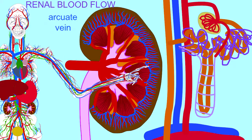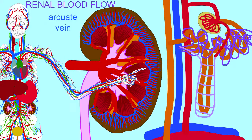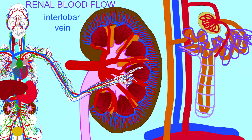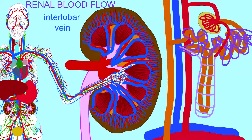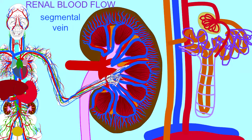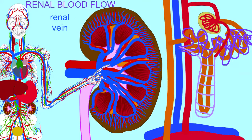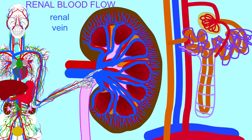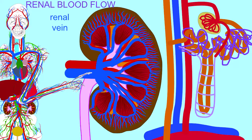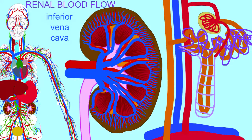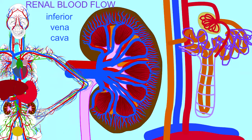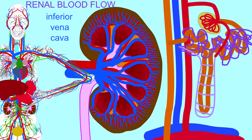These capillaries then drain into cortical radiate veins, which drain into arcuate veins, which drain into interlobar veins, which drain into segmental veins, which drain into the renal vein. The renal vein departs the kidney and brings the deoxygenated blood to the inferior vena cava.